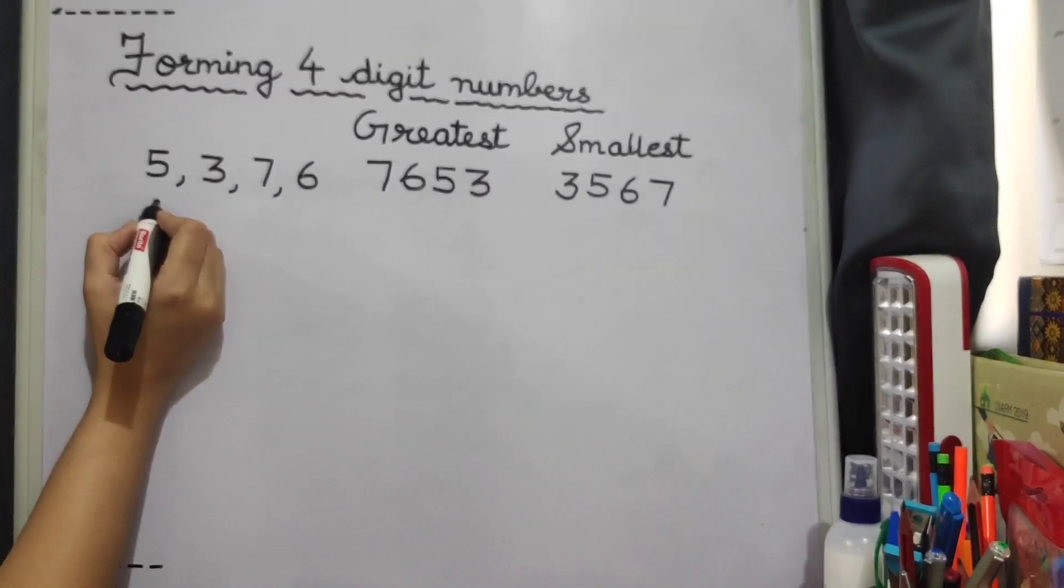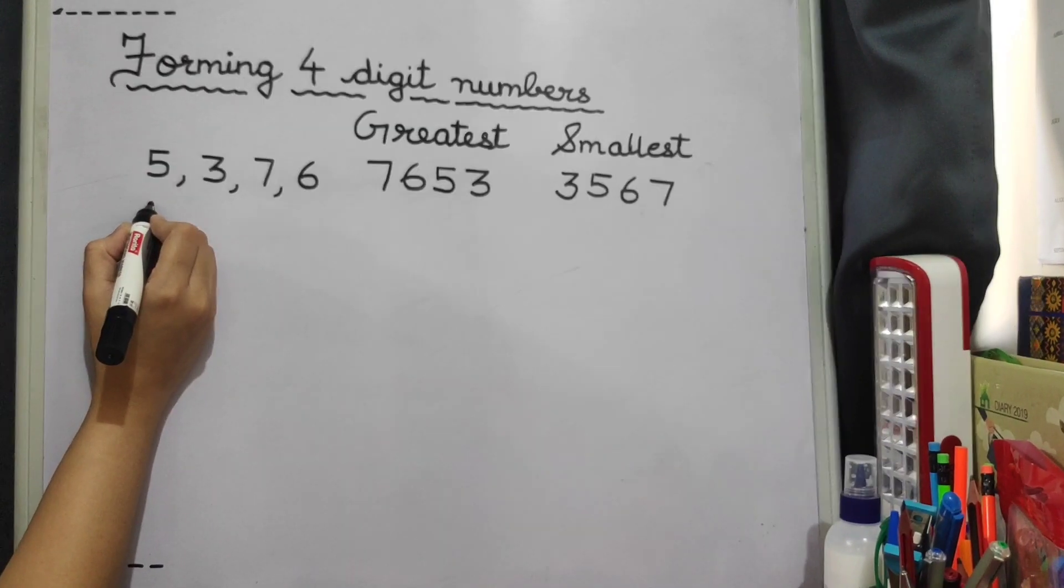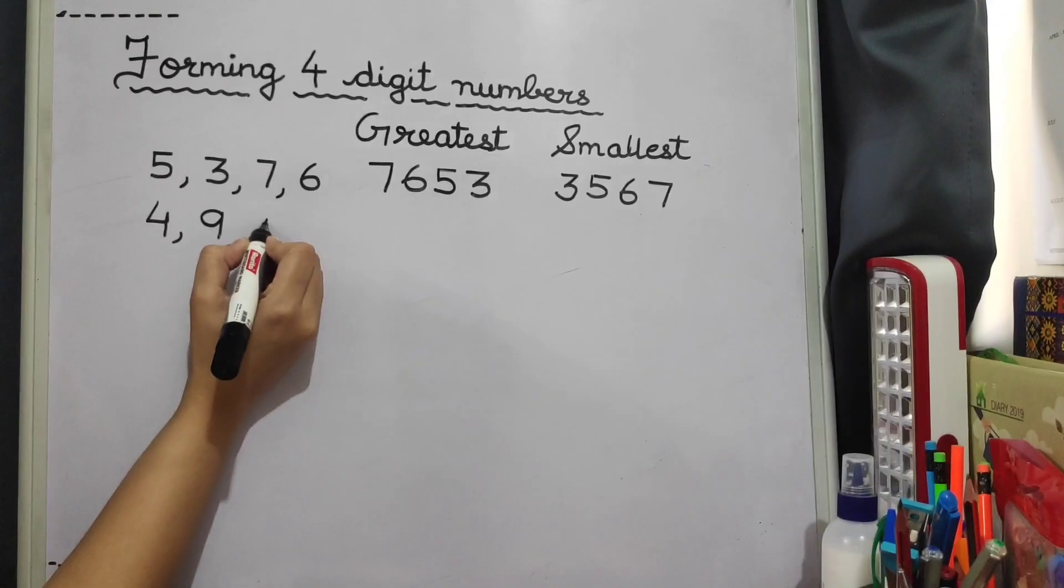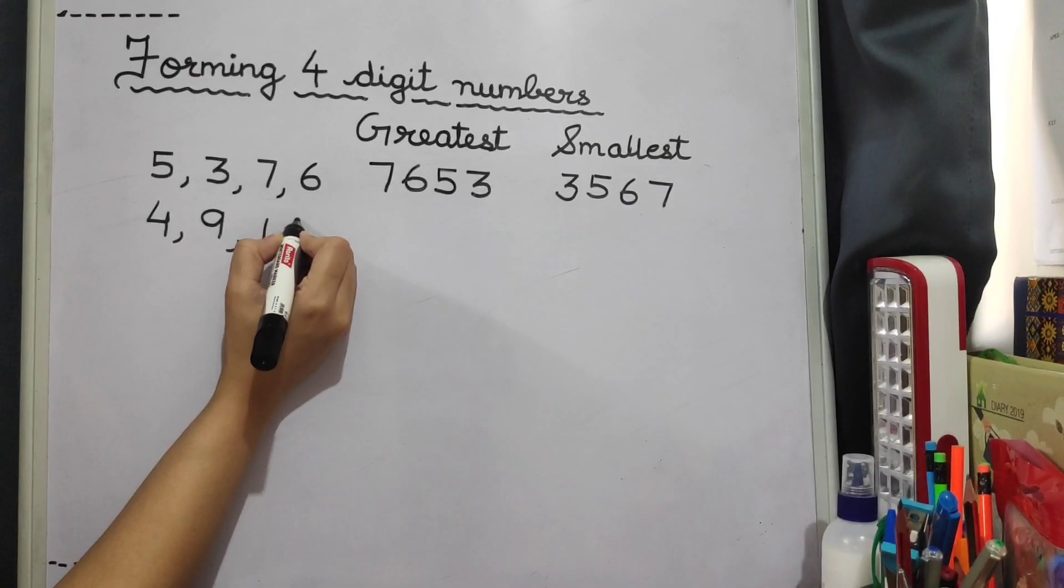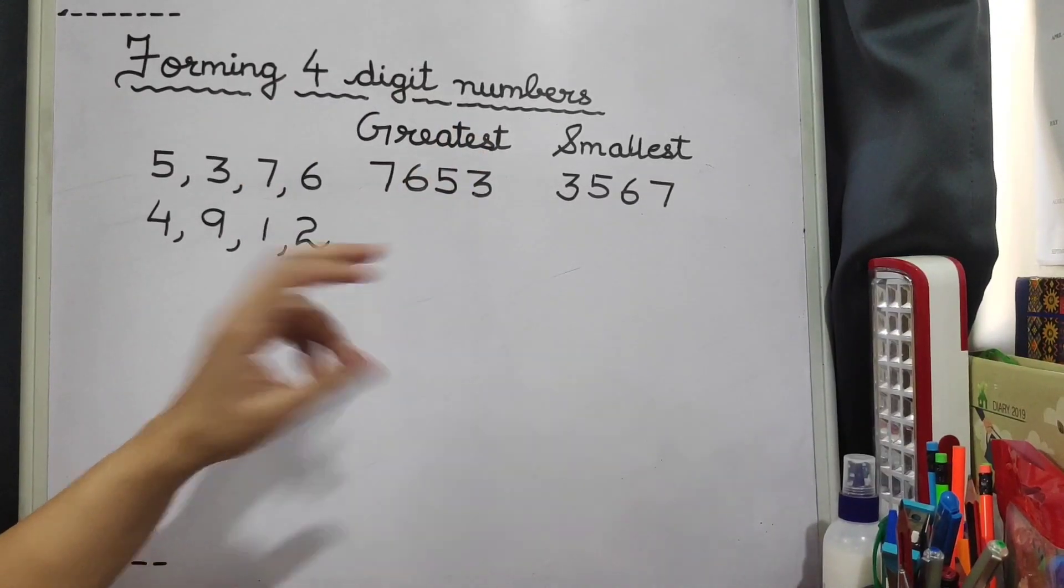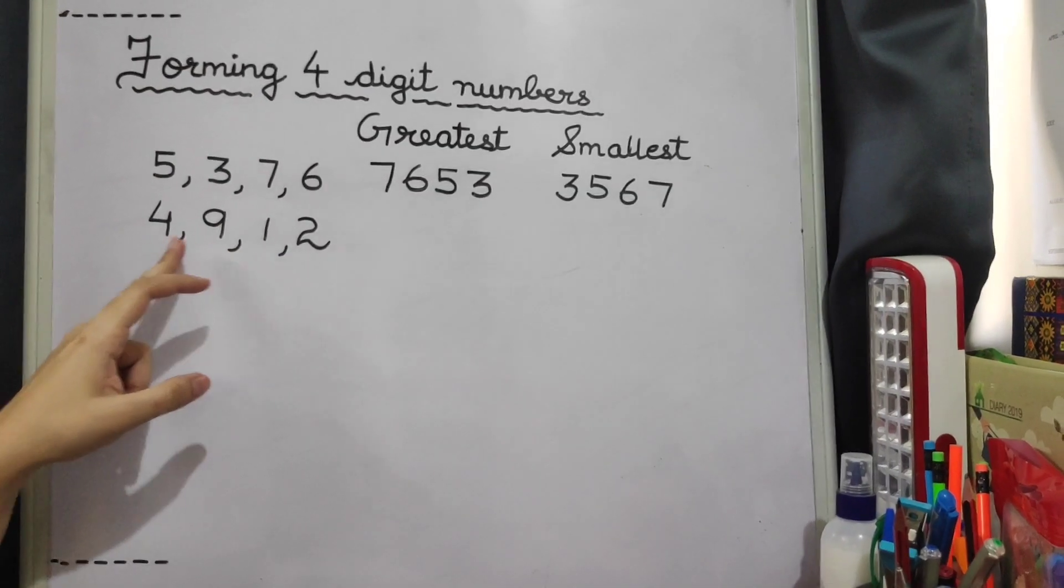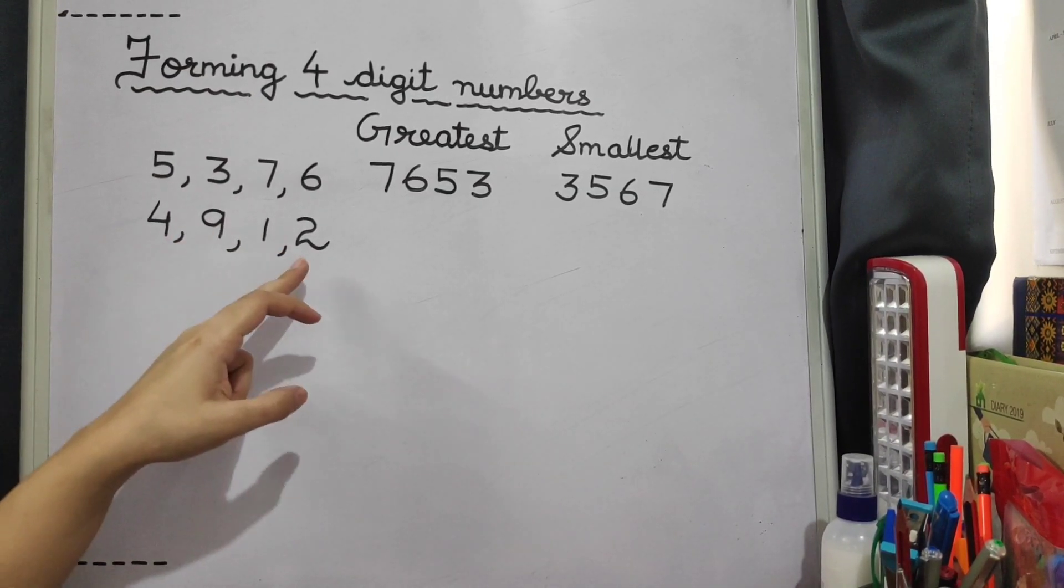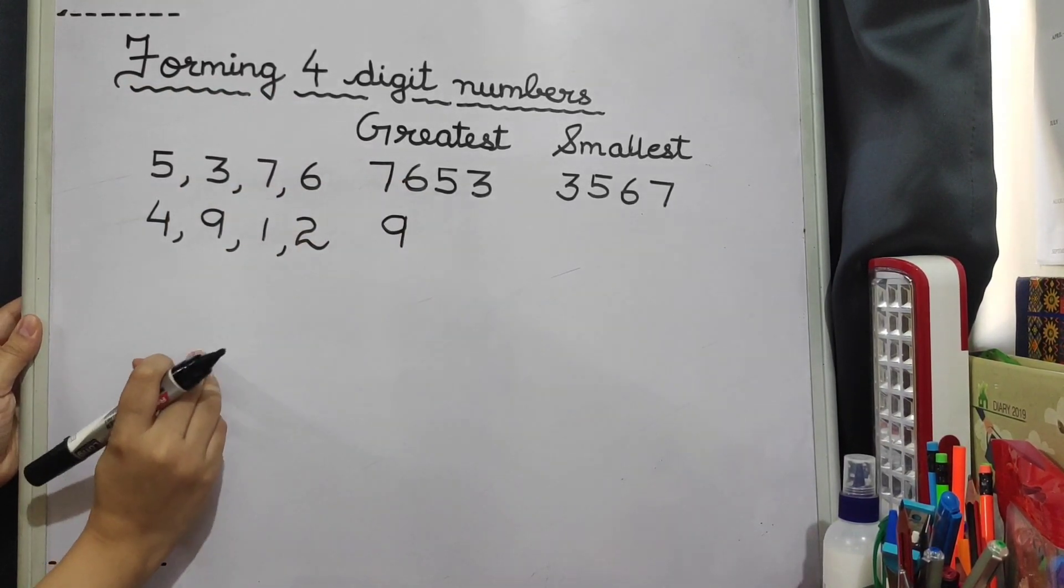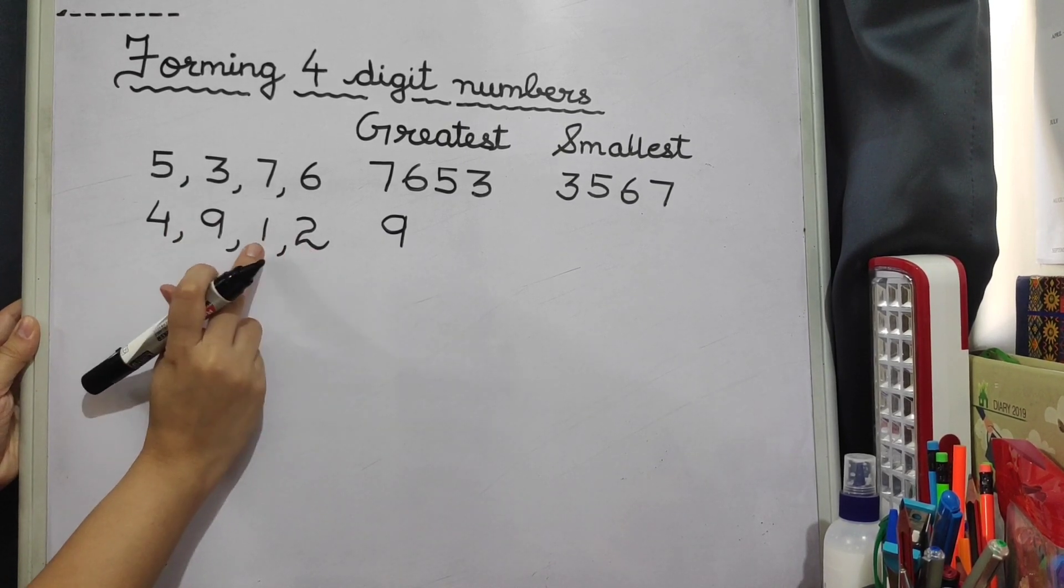Now let's do one more. Suppose the digits given to you are 4, 9, 1 and 2. Now how to form the greatest four digit number? We will start with the greatest number given out of these four digits which is 9. So first digit is 9. Then after 9 it is 4, then 2, then 1.